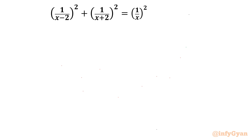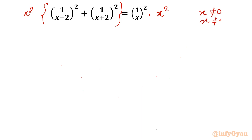Let's get started by multiplying both sides by x squared. But before that, we note the domain restrictions: x cannot be equal to 0, x cannot be equal to 2, and x cannot be equal to negative 2. If x equals 0, 2, or negative 2, the denominator will be zero, making the expression undefined. So we will avoid those values.